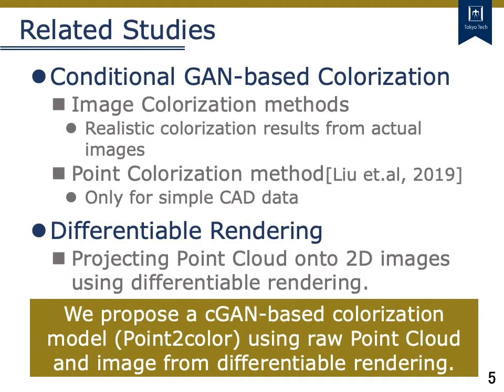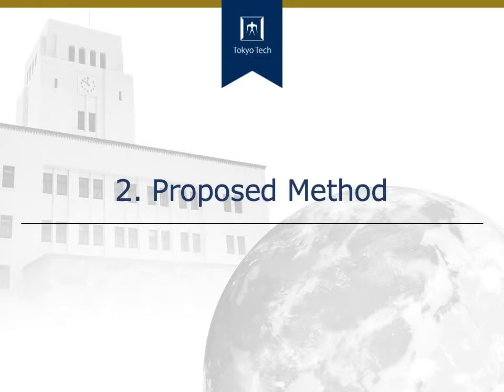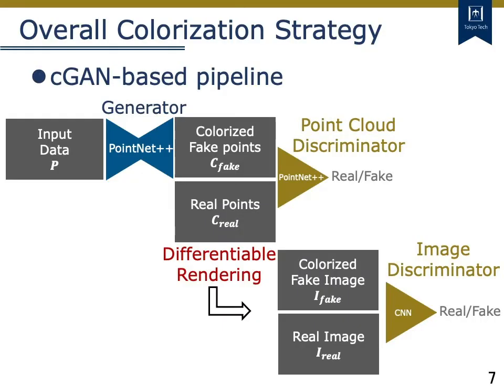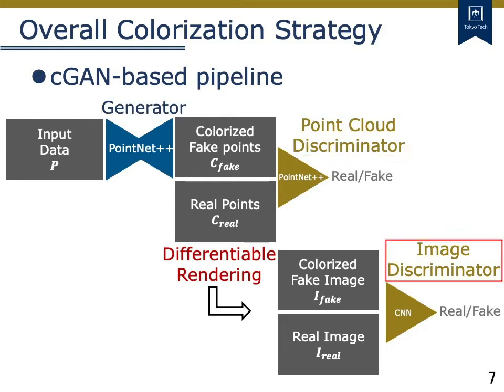In this study, we propose a conditional GAN-based colorization model, Point2Color, using raw point cloud and images from differentiable rendering. Our proposed method consists of three neural networks: a generator that is used for the colorization, a point discriminator that evaluates the colored point cloud, and an image discriminator that evaluates the colored image projected by differentiable rendering.